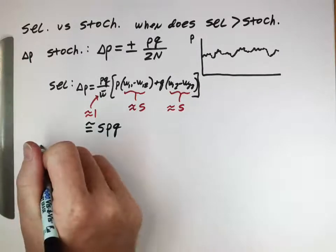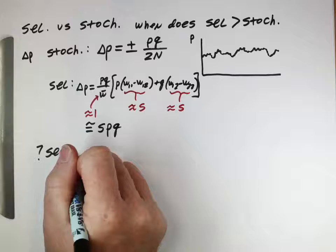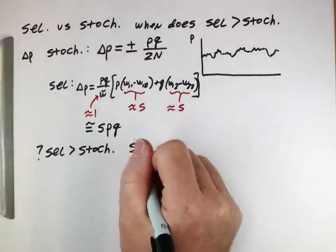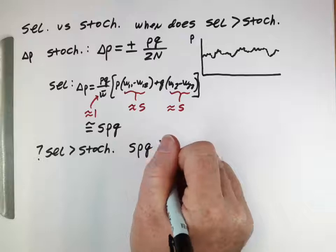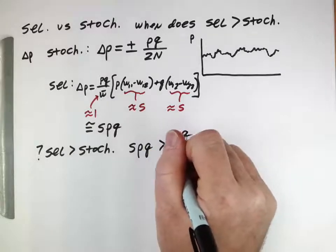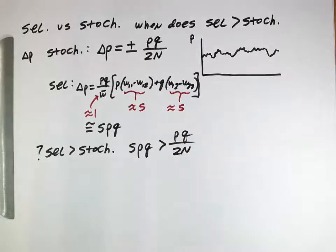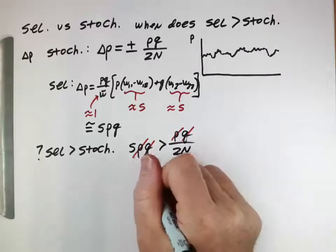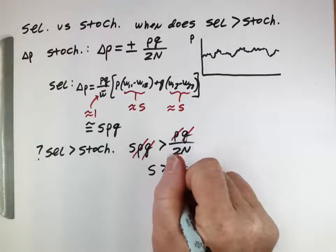So when is selection more powerful than stochasticity? When does selection change the allele frequency more than stochasticity does? That would be when spq is larger than pq over 2n, which simplifies to when s is larger than 1 over 2n.